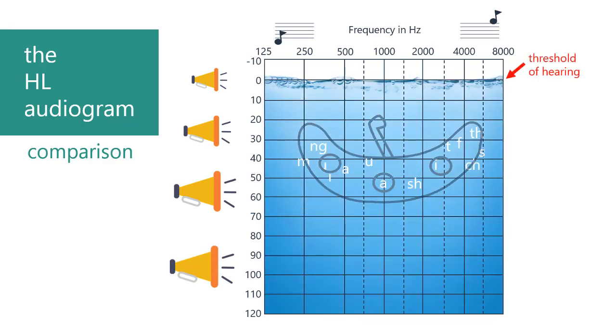The water represents everything a person with typical hearing can hear. Above the water line, sounds are too quiet to hear. At the water line, they are just loud enough. This line is called the threshold of hearing. Most people can begin to hear soft sounds when they are this loud. Between 0 and 15 decibels is considered typical hearing. Down at the bottom of the chart, sound becomes too loud to be comfortable. Let's say that's the bottom of the ocean. And that's how the HL audiogram is laid out.